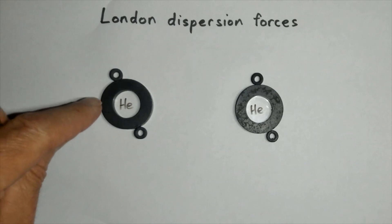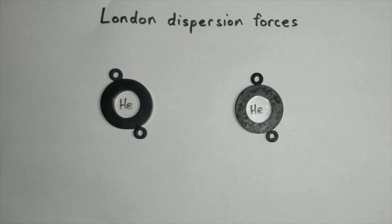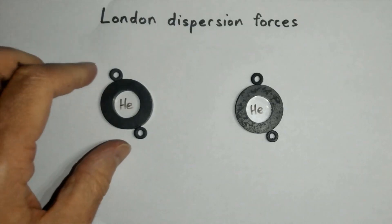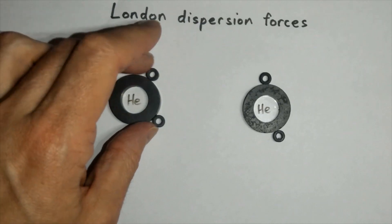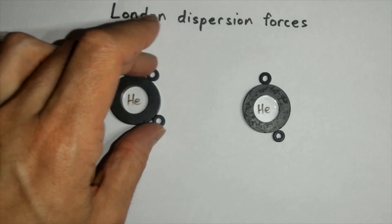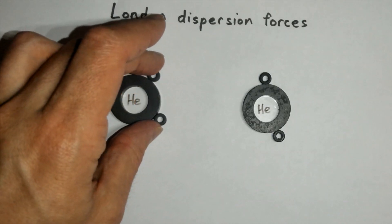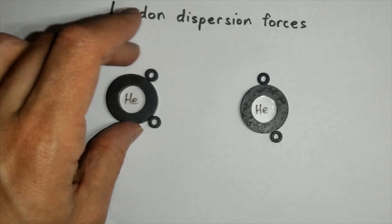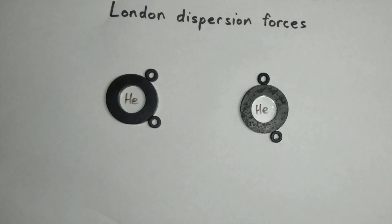Typically in a helium atom, you will have two outer electrons which will repel each other at opposite sides of the atom. However, because electrons can move around — and they still repel each other — you can sometimes get this occurring when the electrons move to one side of the atom.